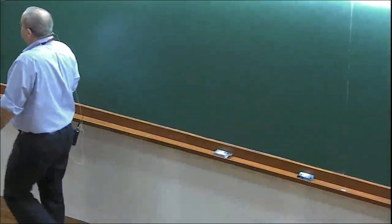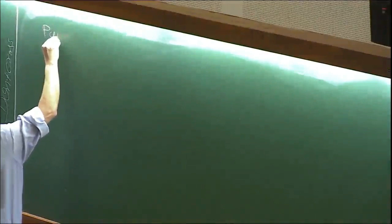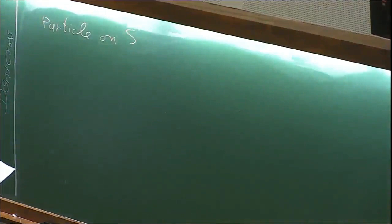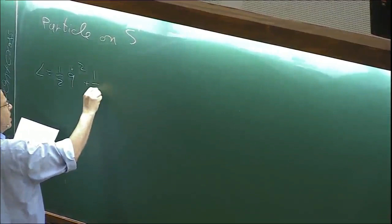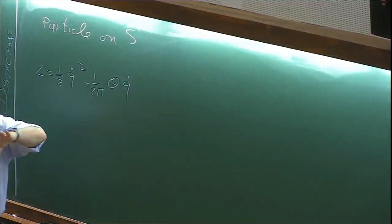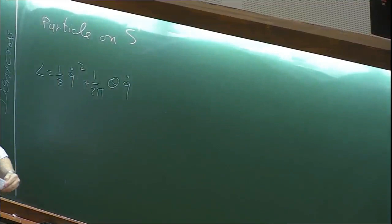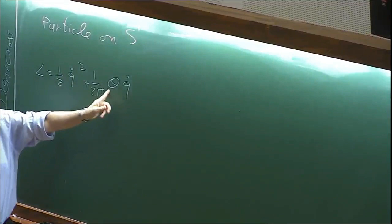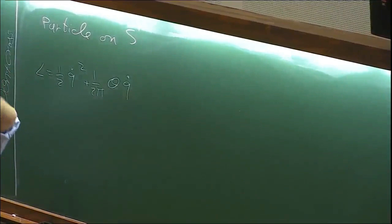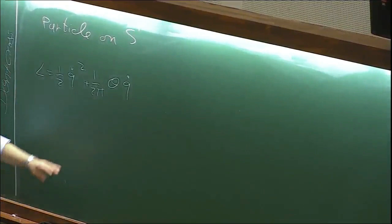The system I'm going to study is a quantum mechanical particle on a circle. The Lagrangian is one-half q-dot squared, and I can also add a term: one over two-pi times theta times q-dot. The physical interpretation of theta is that it can be thought of as magnetic flux through the surface. Classically, this term doesn't affect the equations of motion — the particle freely moves with constant velocity — but quantum mechanically this term is important.